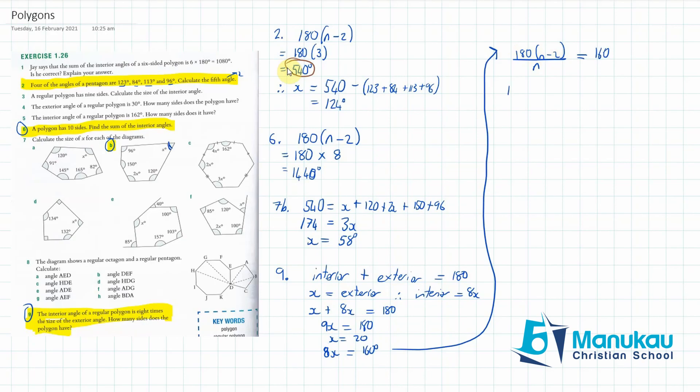Now, I'm going to expand my brackets to get 180n minus 360. And that's all going to be over n, and that's equal to 160. My next line, I'm going to pull that n across. So, I'm going to get 180n minus 360, is equal to 160n. I've times both sides by n. And then, my next line, I'm going to go 180n minus 160. So, I've pulled my 160n across, equals 360. And then, I'm going to get 20n equals 360. And then, I'm going to get n equals 18 sides.